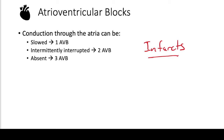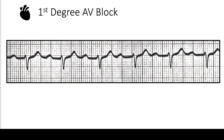First degree AV block is a prolongation of the PR interval. The key value is greater than 200 milliseconds, and we remember that one big box on the EKG equals 200 milliseconds. So if you see the PR interval is greater than that, you have a first degree AV block.